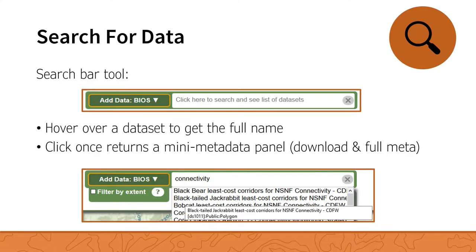You can search through our data catalog using the Add Data tool, which generates an alphabetical list of available datasets. This list can be further refined by entering keywords to filter results — for example, entering 'connectivity' will return only results related to species connectivity. If you hover your cursor over a result, a box with the full dataset name appears. To limit search results geographically, if you zoom to level 10 or higher, you gain the ability to filter by extent, so results will display only those features that draw within the current map extent.